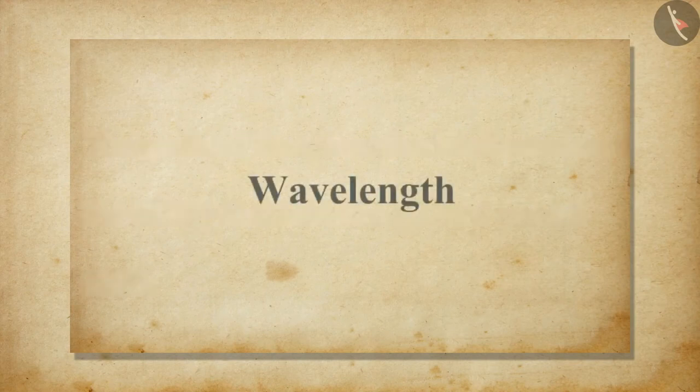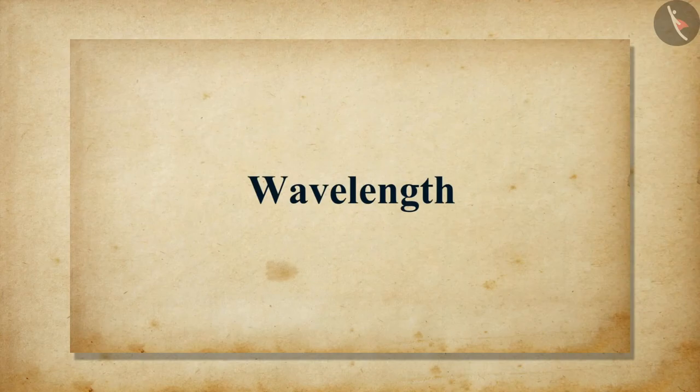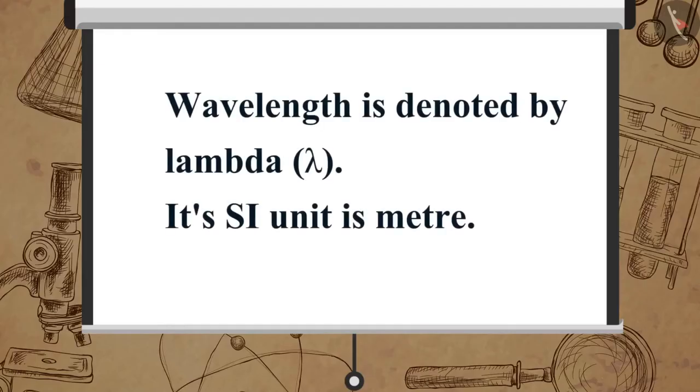The distance between two consecutive compressions or two consecutive rarefactions is called wavelength. Wavelength is denoted by lambda. Its SI unit is meter.